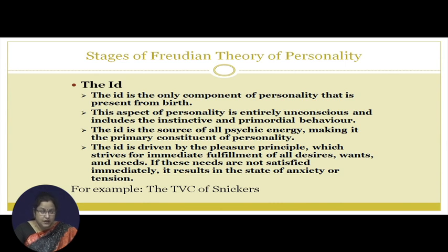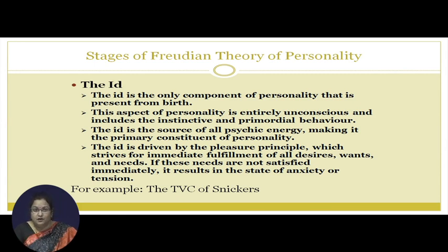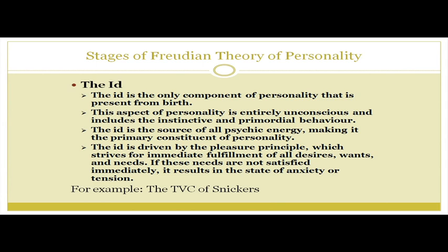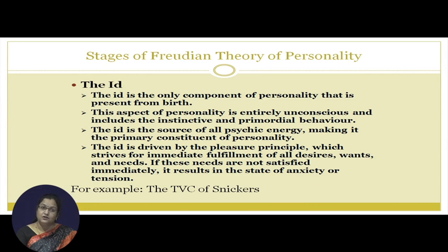The ID is the first stage of Freudian theory of personality and it is the only component of personality present from birth. This aspect of personality is entirely unconscious and includes the instinctive and primordial behavior — like, I am very hungry and I want food right now. I don't think about whether I should grab food from someone else or buy it somewhere; I just want food somehow. This behavior, without any social or moral consideration, when I am only thinking to satisfy my requirement, is childlike behavior. The ID is a source of all psychic energy, making it the primary constituent of personality.